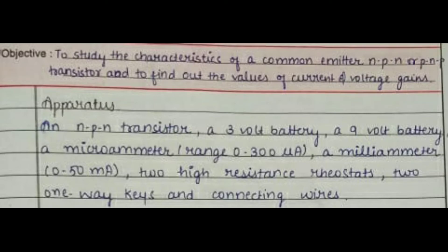The objective of this video is to study the characteristics of a common emitter NPN or PNP transistor and to find out the values of current and voltage gain. The apparatus we'll need is an NPN transistor, a 3-volt battery, a 9-volt battery, a micro ammeter of range 0 to 3 micro ampere, a milliammeter, two high resistance rheostats, two one-way keys, and connecting wires.